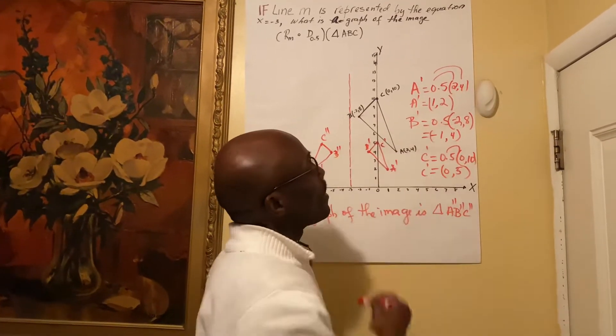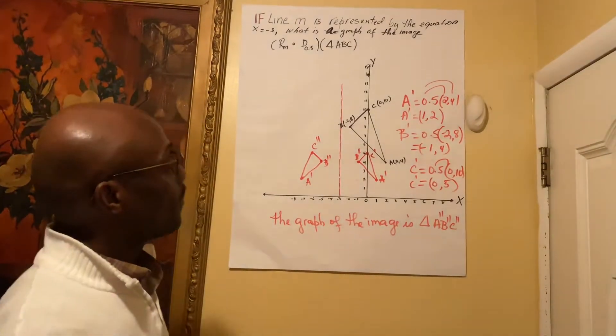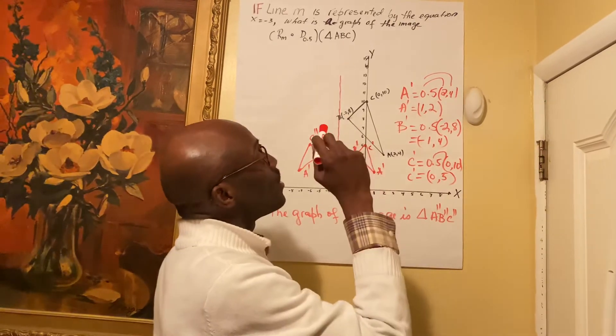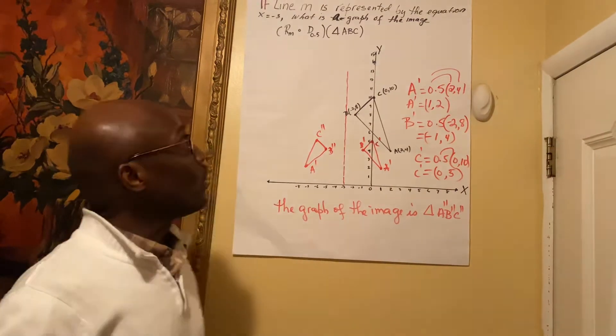We do exactly the same thing for B' and for C'. We use the scale factor 0.5 to dilate the pre-image triangle ABC.